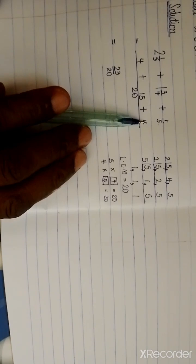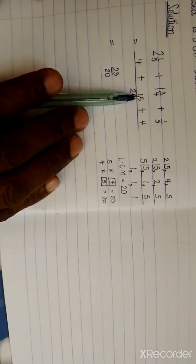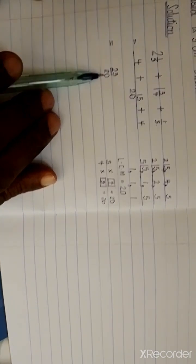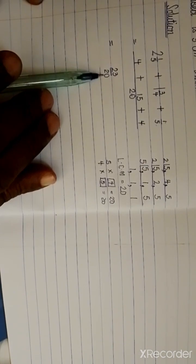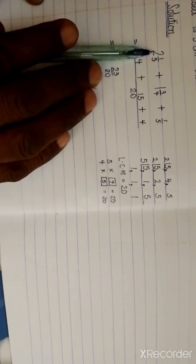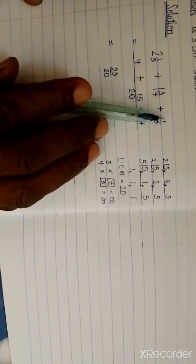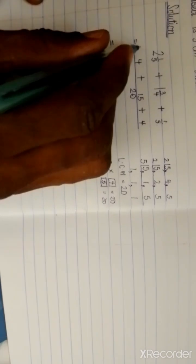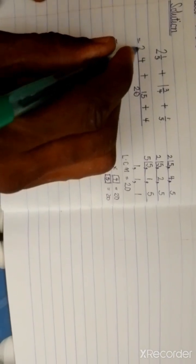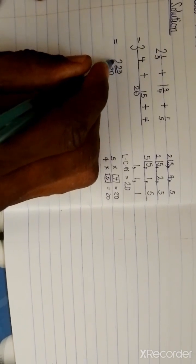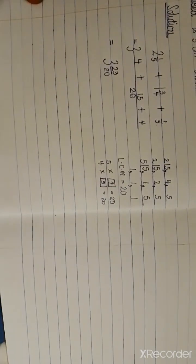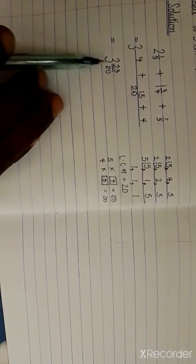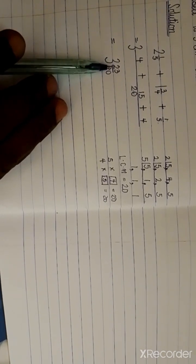Next we add the whole numbers: two and one. There's no whole number with the glue fraction, so two plus one gives us three. We write the three whole number to the side. This gives us three and twenty-three over twenty, which is an improper fraction since twenty-three in the numerator is greater than twenty in the denominator.